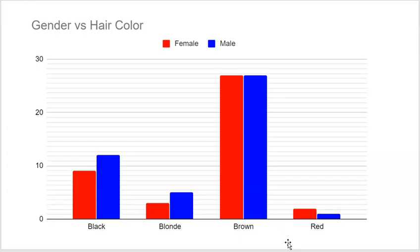We could talk about our data and observe that the same proportion have brown hair for boys and girls — about the same. More boys have black hair than girls, and more boys have blonde hair. But when it comes to red, very few people have red hair to begin with, but more girls have red hair. It's a nice way to talk about your data and easily see two variables: gender across hair color.